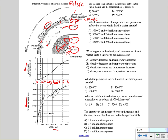For example, to find the pressure in millions of atmospheres at a depth of 4,000 kilometers, you go to 4,000 km, go up to the line, and read across — it's approximately 2.2 million atmospheres. At 5,000 kilometers it's about 3 million atmospheres. At about 2,000 kilometers, it's a little less than 1 million atmospheres. That's how you read the pressure graph.